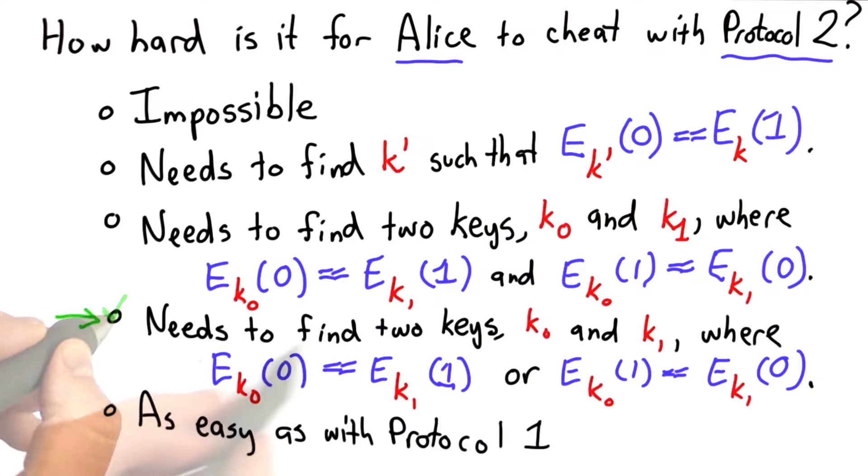The answer is the fourth choice. If she can find two keys where either the encryption of 0 with key 0 is equal to the encryption of 1 with key 1, or the opposite, then at least half the time she has an advantage.